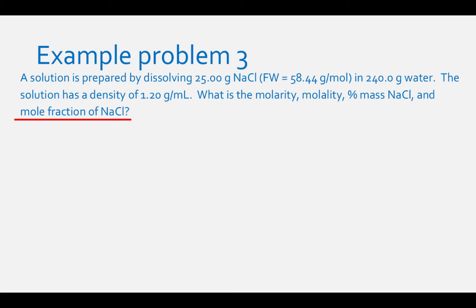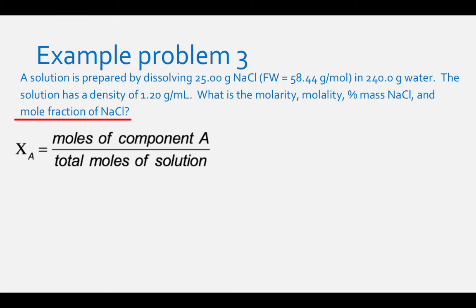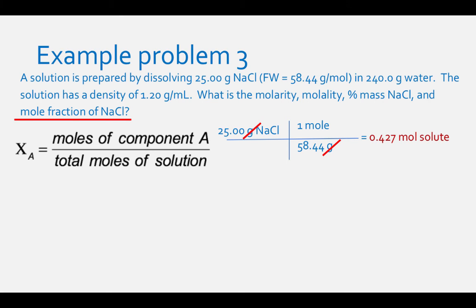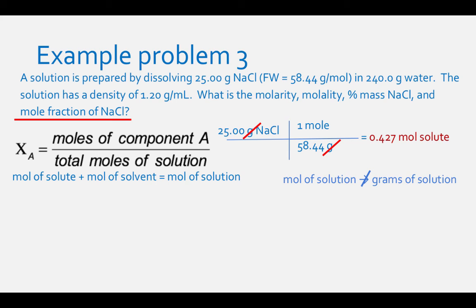To find the mole fraction of NaCl, divide moles of solute by total moles of solution. The moles of solute is 0.427. You may ask why we can't calculate moles of solution from grams of solution — it's because the solution is a mixture of NaCl and water and does not have a single molar mass. This is why we calculate moles of solvent separately and add them.